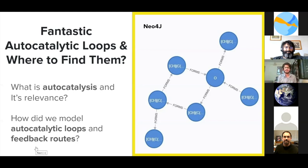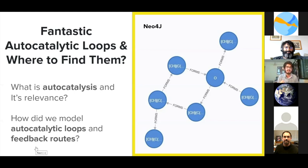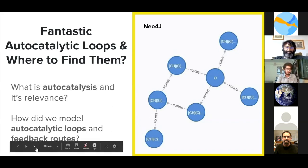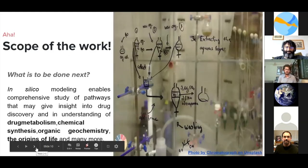Whatever outputs we were getting, we fed them into Neo4j, and it was making these huge, beautiful graphs showing connections in the form of nodes — like your Facebook friends and mutual connections. We used autocatalytic loops and feedback routes — both negative and positive feedbacks — which are mainly used in biochemical metabolisms.